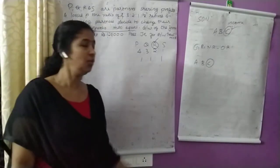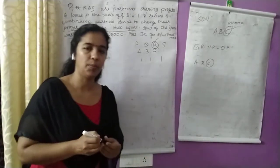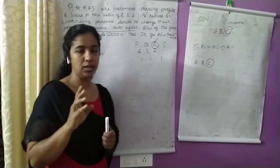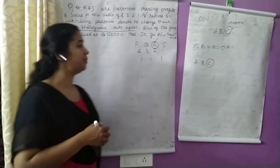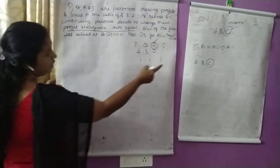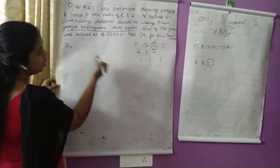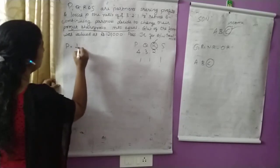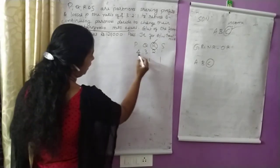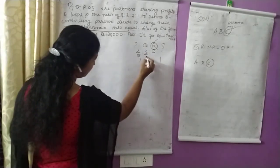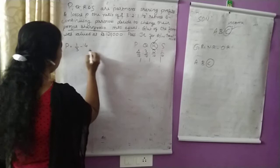What is the new ratio? The new ratio is 1 by 3 for each remaining partner. Gaining ratio is equal to new ratio minus old ratio. The new ratio is 1 by 3. Minus the old ratio, which is 4 by 10 for P. This is the old ratio.